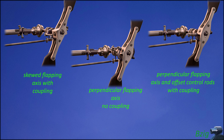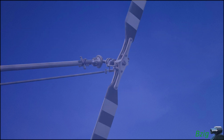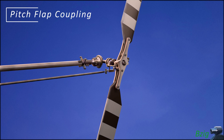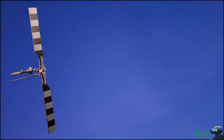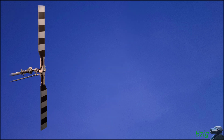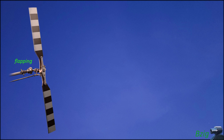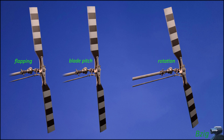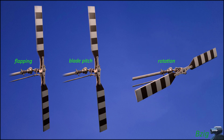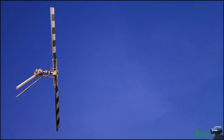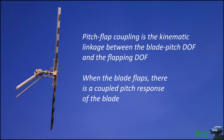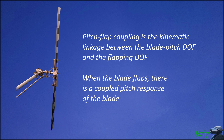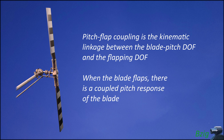Before getting into these different designs, let's talk about pitch flap coupling. This is going to be a key thing in understanding the motions of the tail rotors. A tail rotor has three mechanical degrees of freedom: flapping, blade pitch change, and rotation. Pitch flap coupling is the kinematic linkage between the blade pitch degree of freedom and flapping degree of freedom — in other words, when the blade flaps, there's a coupled pitch response of the blade.